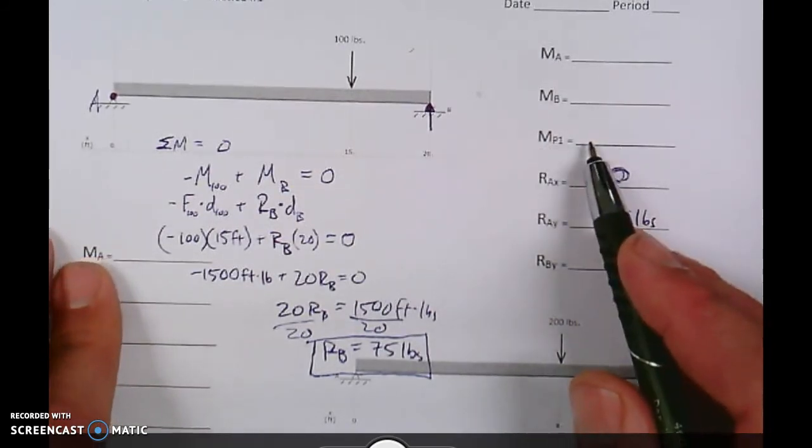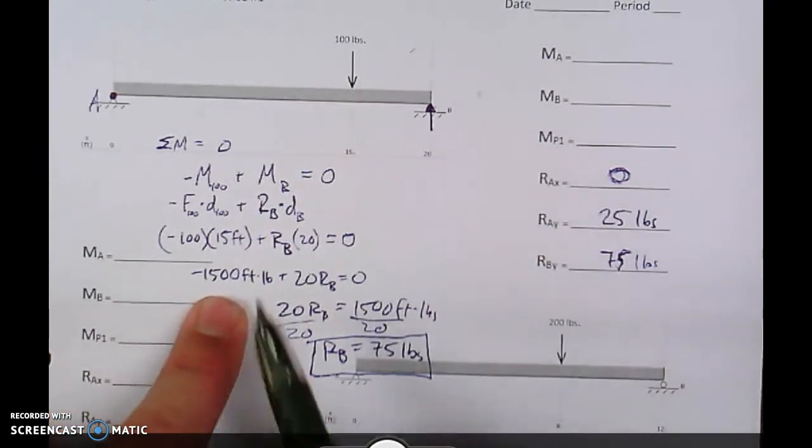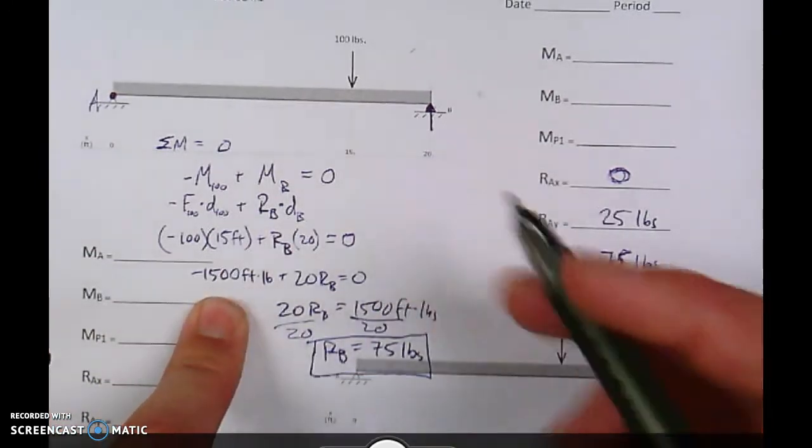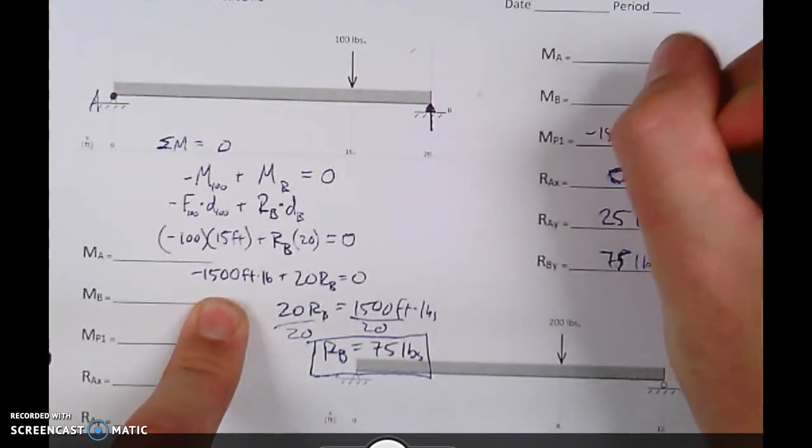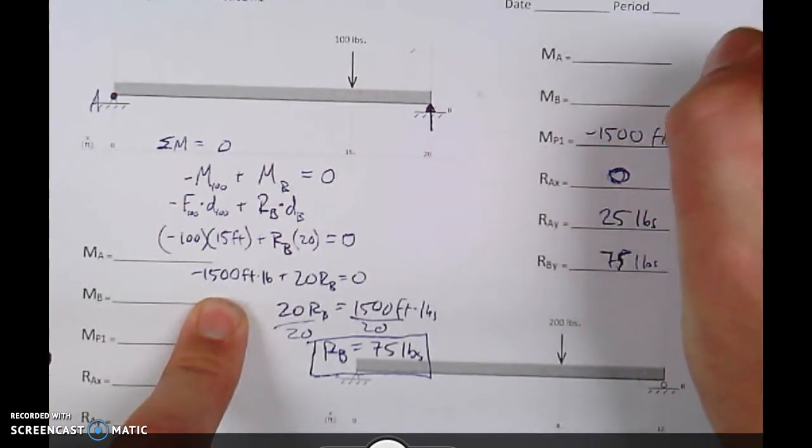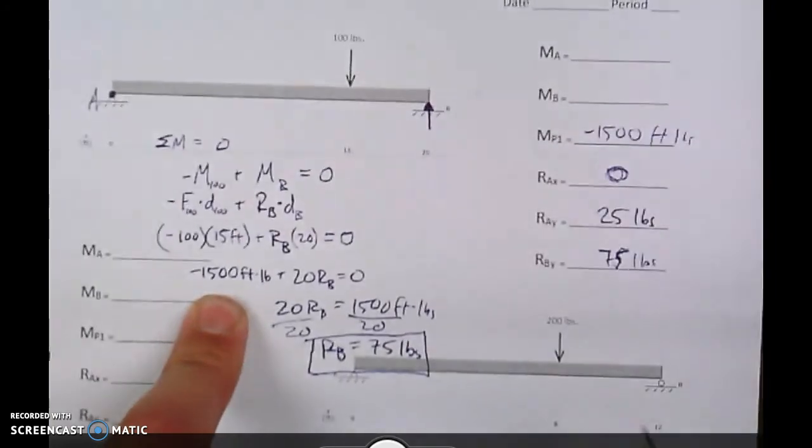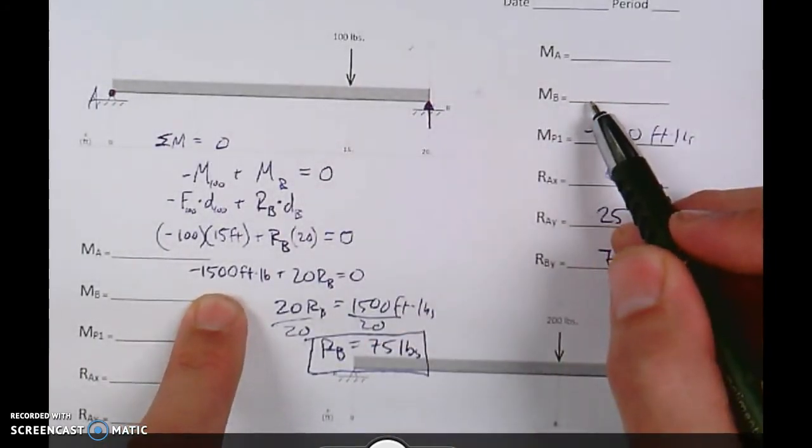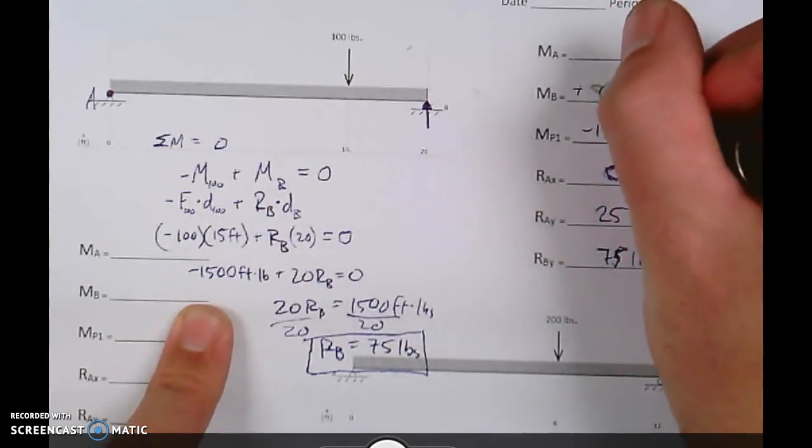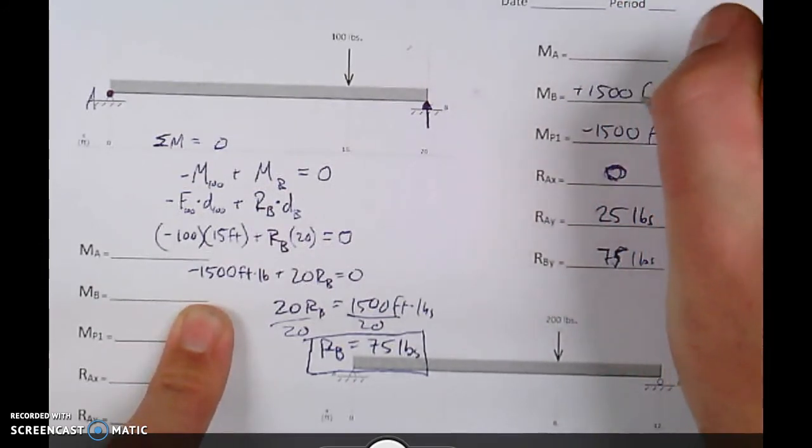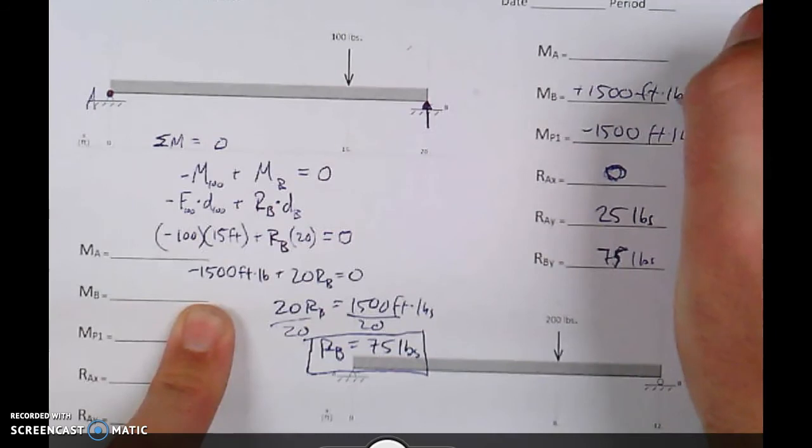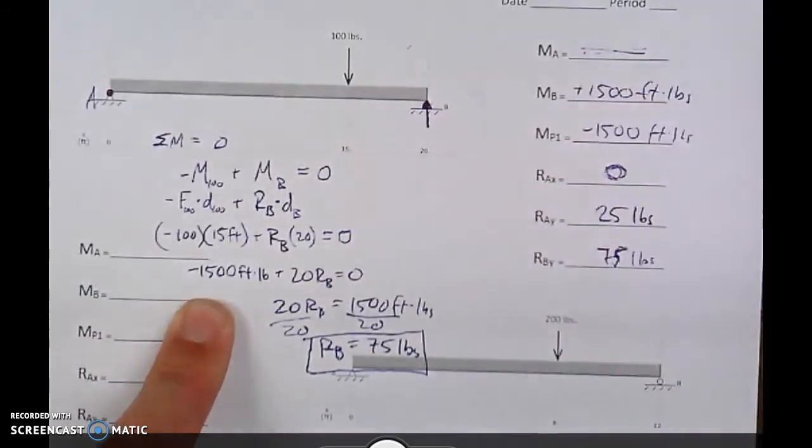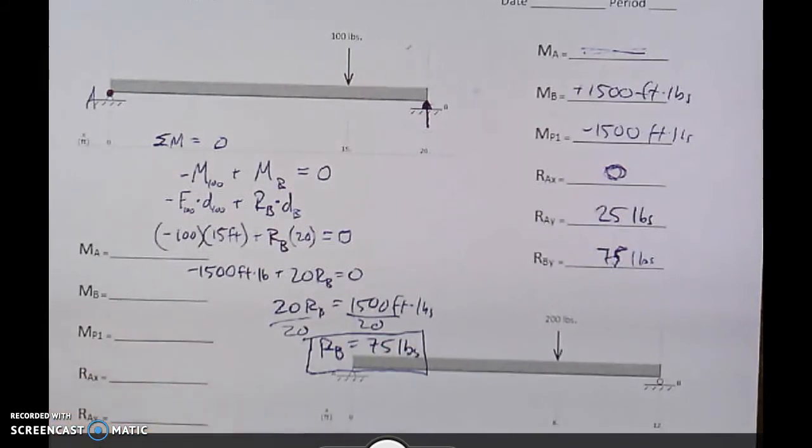Moment at point 1, for us, at point 1, which is where the 100 was, our moment was negative 1,500 foot-pounds. The moment at point B was positive 1,500 foot-pounds. And since we chose A as our point of rotation, there is no moment at A.